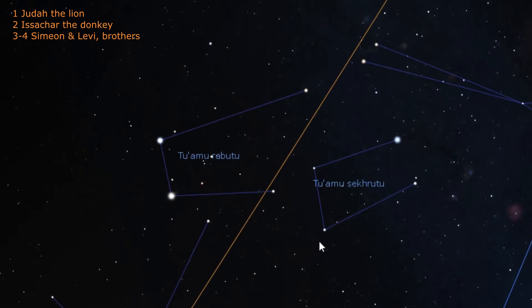Next to Issachar are Simeon and Levi, brothers. The Babylonian constellation Tuamu Rebutu means great twins. This constellation depicts two very close brothers or twins.